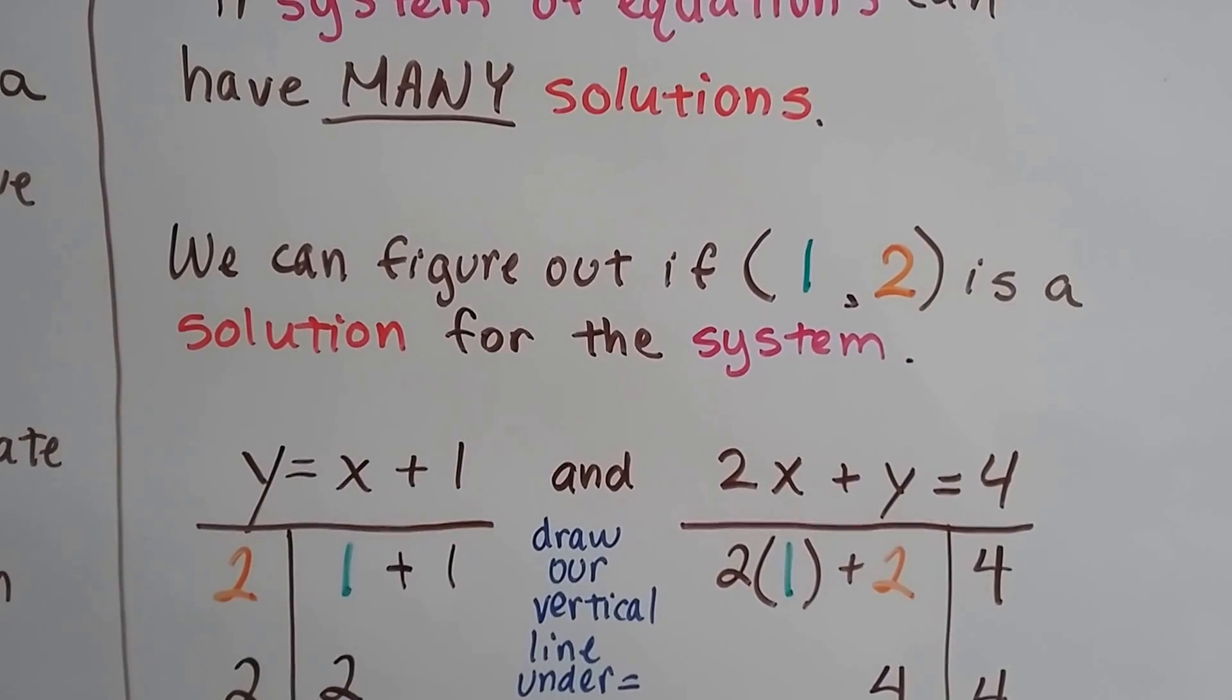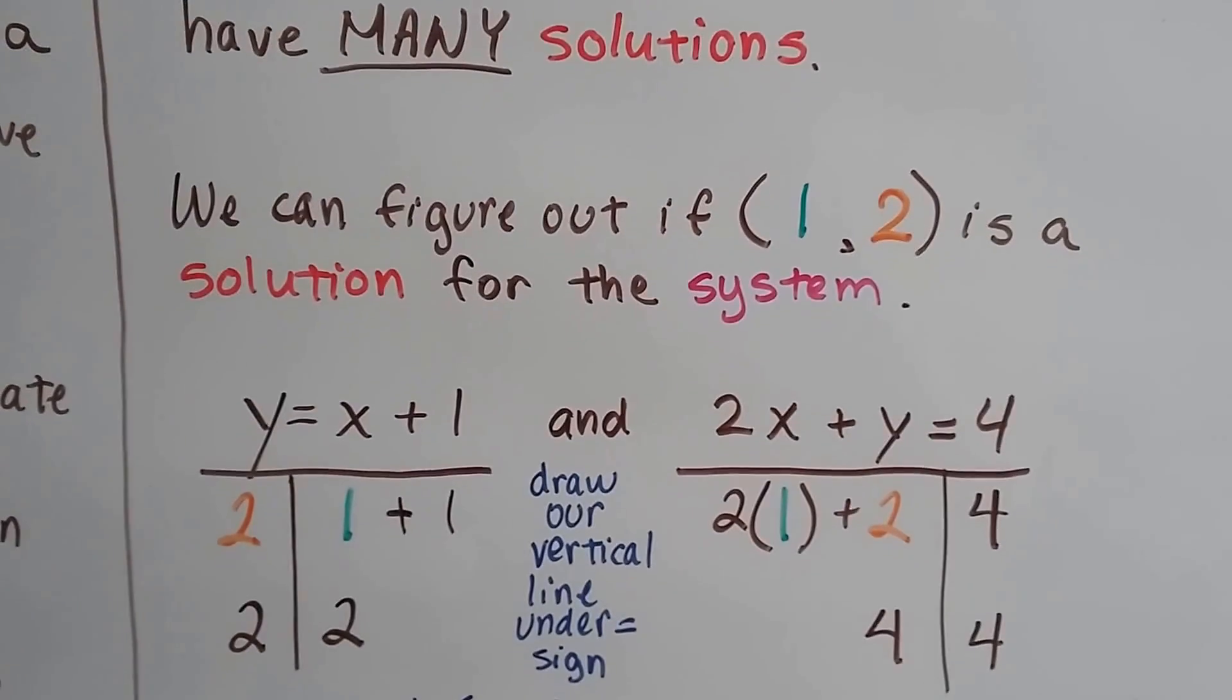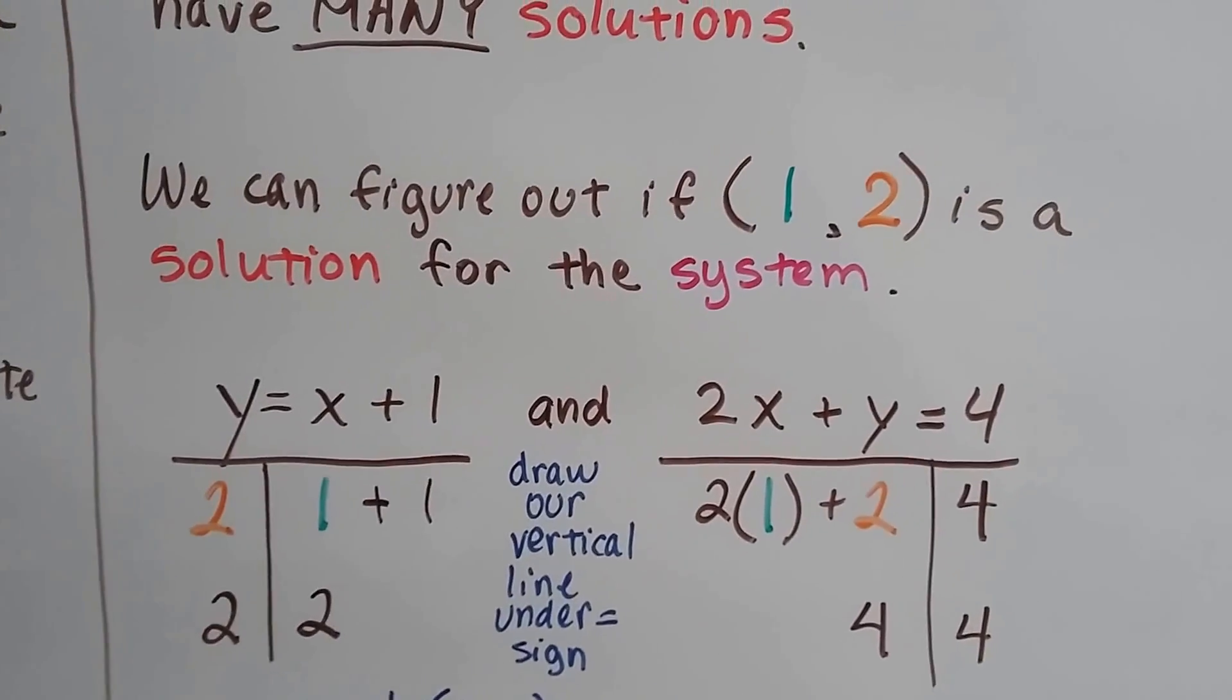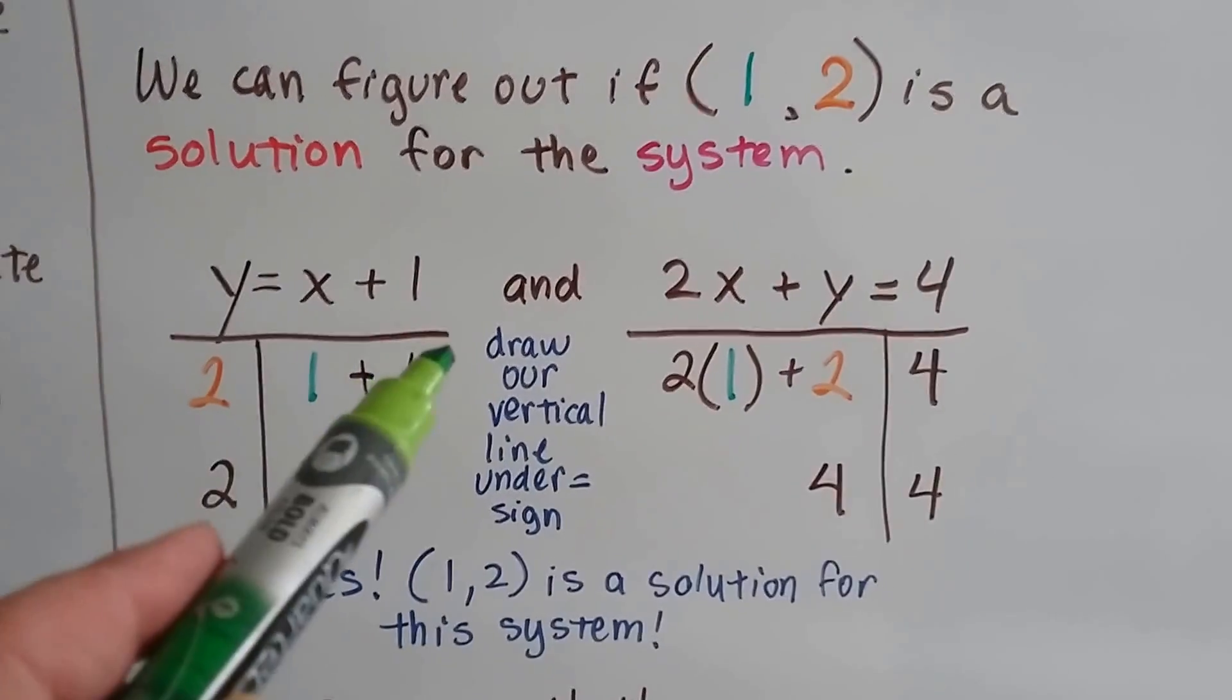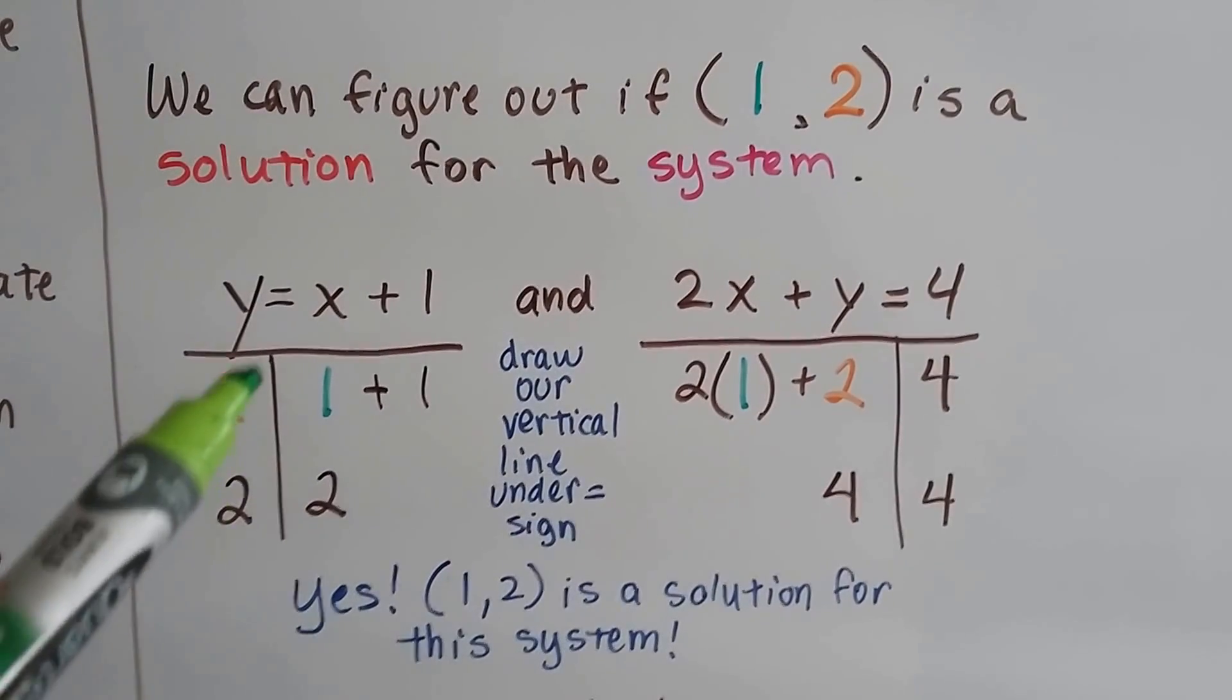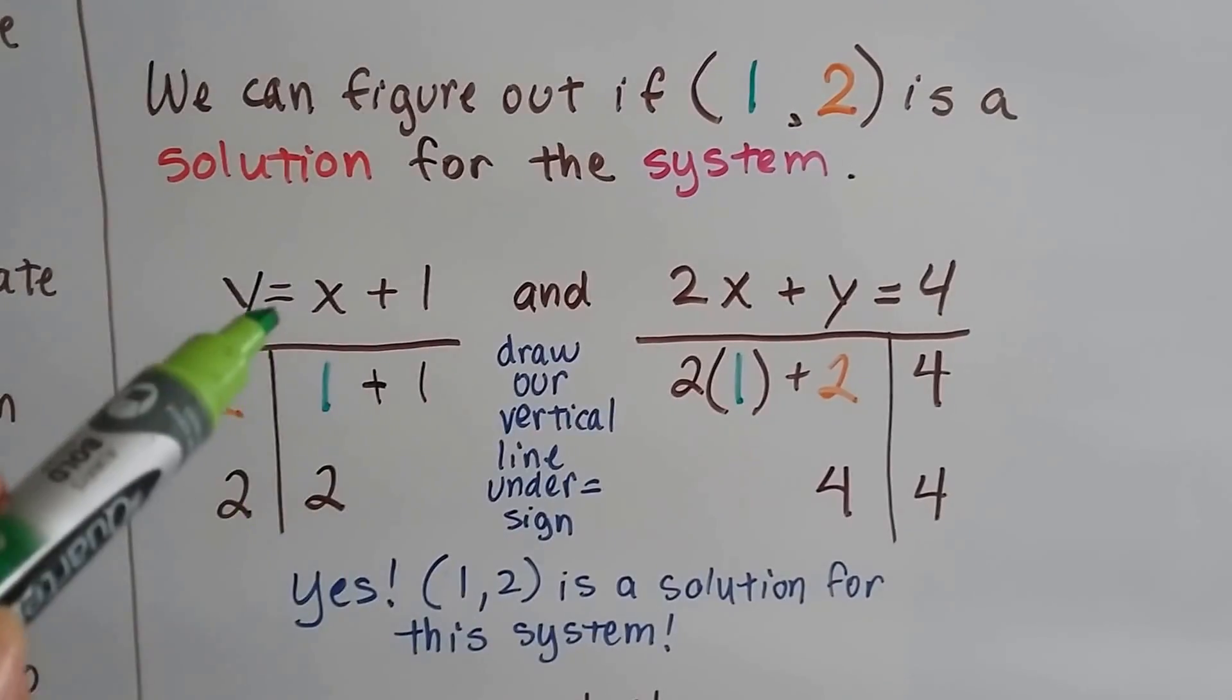We can figure out if one for x and two for y is a solution for this system. We've got y equals x plus 1 and 2x plus y equals 4. So we draw a line underneath them to make a table, and we draw a line coming down. See? Our vertical line is under the equal sign.